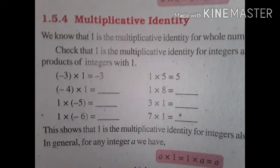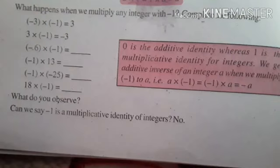This shows that 1 is the multiplicative identity for integers as well. We can say that A into 1, or 1 into A, is equal to A. This is the property of multiplication with 1.